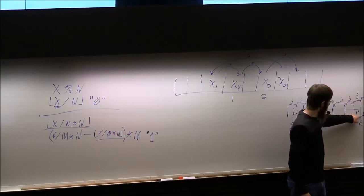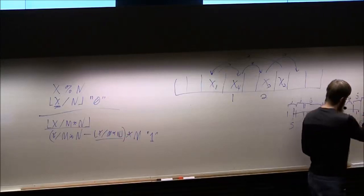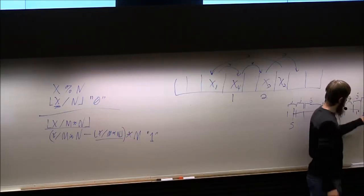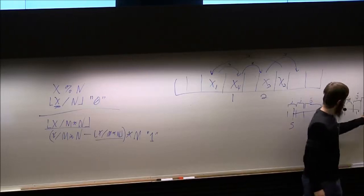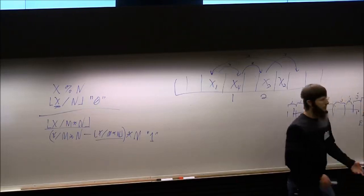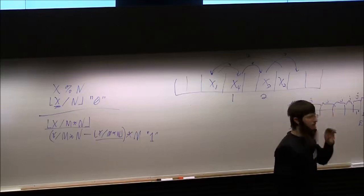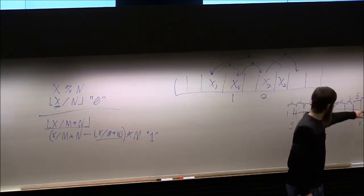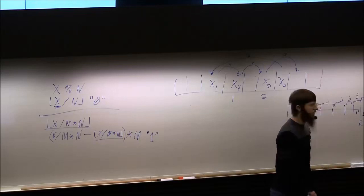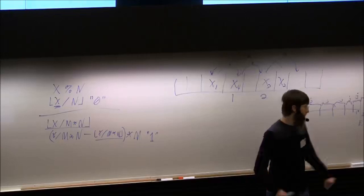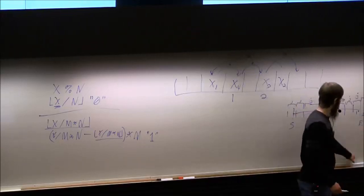There are some false positives: if you collided here with something that was stored somewhere else within the J minus one range, that would be a false positive. But there are very few of these because J is going to be a really small number compared to the chain length, so there won't be many false positives.